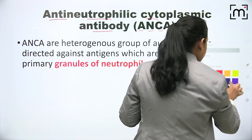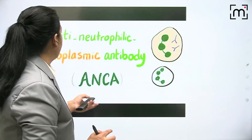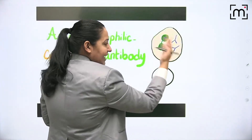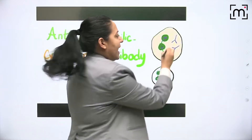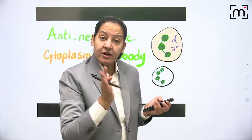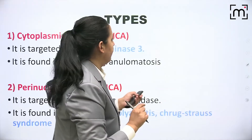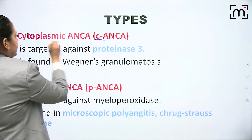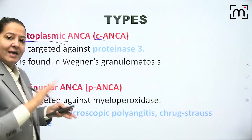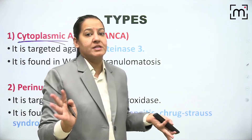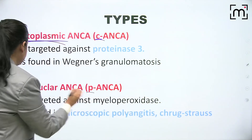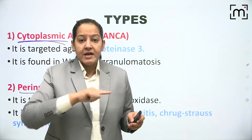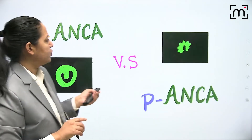ANCA are antibodies against the granules present in the cytoplasm of neutrophils. There are two types: c-ANCA and p-ANCA. C-ANCA - 'c' stands for cytoplasmic - these antibodies are present randomly anywhere in the cytoplasm. P-ANCA - 'p' stands for perinuclear - they are also present in the cytoplasm but specifically around the nucleus.